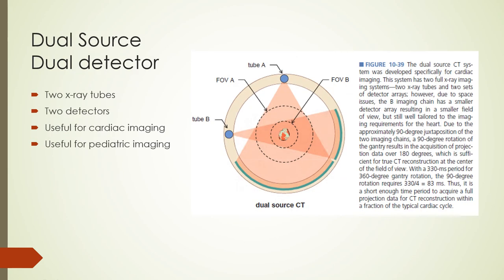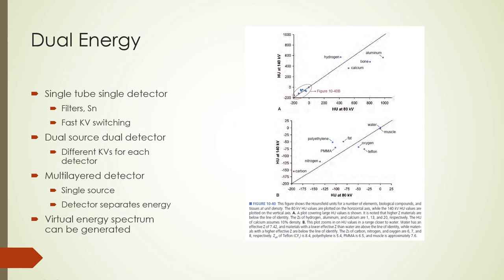The desire to image fast-moving structures like the heart led to the development of dual source and dual detector CT scanners. In dual source CT, the gantry has two X-ray tubes and two detectors at 90 degrees to each other, cutting rotation time in half compared to a single tube and detector system. In some machines, one tube is primary and the other secondary, with the secondary having a smaller generator and smaller detector. Dual source systems are particularly used for cardiac imaging and pediatric patients because of fast rotation times.